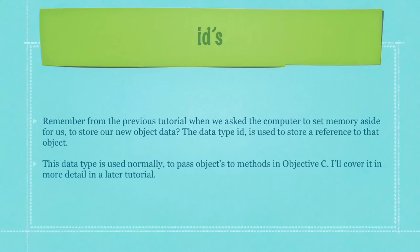Remember from the previous tutorial when we asked the computer to set memory aside for us to store our new object data? Well, the data type ID is used to store a reference to that object, and this data type is used normally to pass objects to methods in Objective-C. I'll cover it in much more detail later in the tutorial.